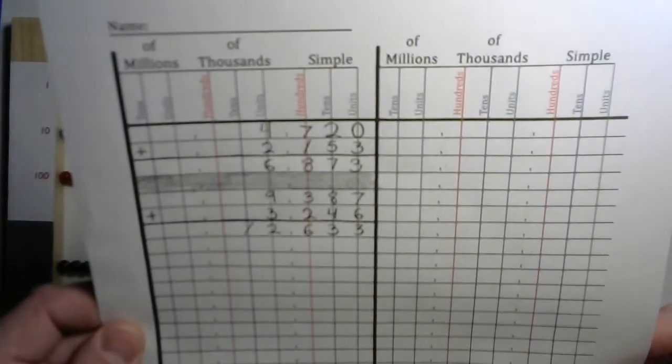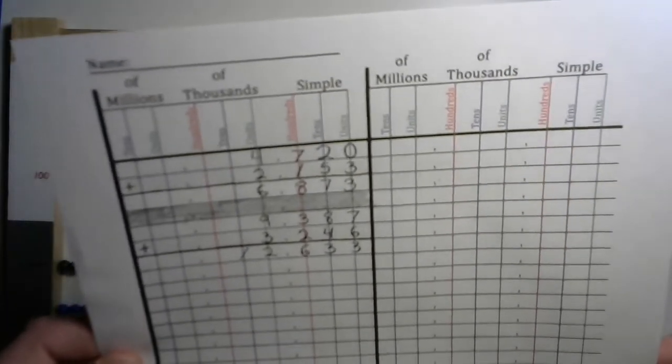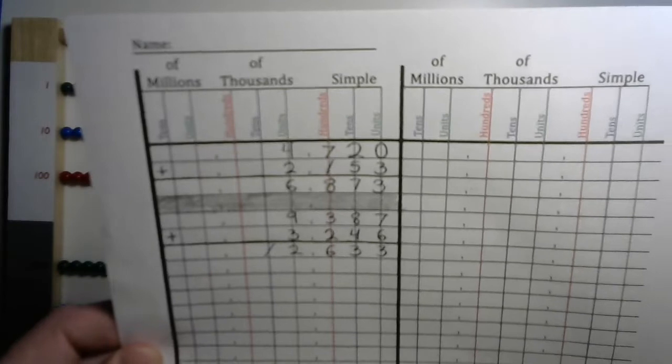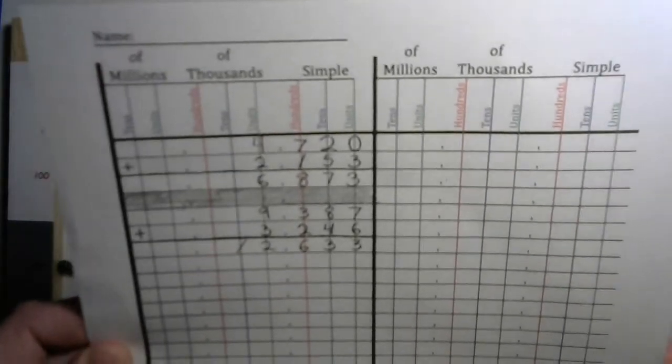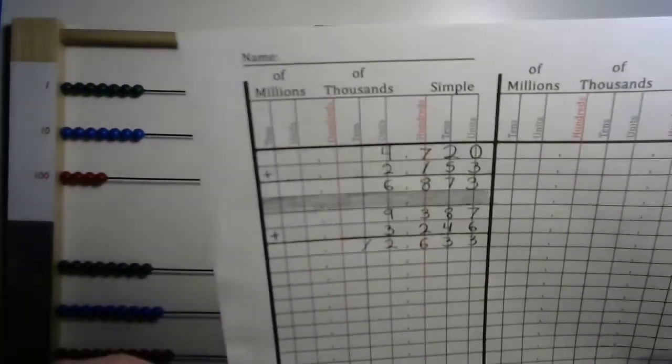Imagine if you had 9,387 donuts and someone gave you 3,246 more donuts. Then you'd have 12,633 donuts. That's a lot of donuts. Can I have a couple?